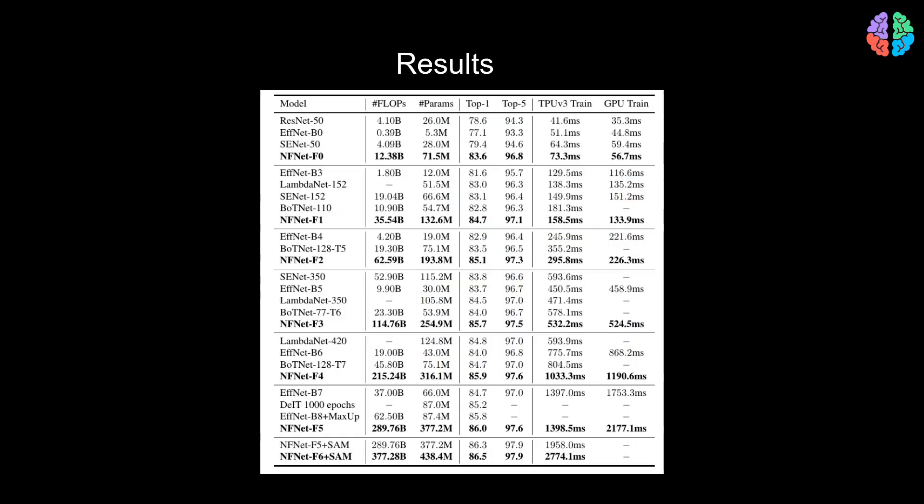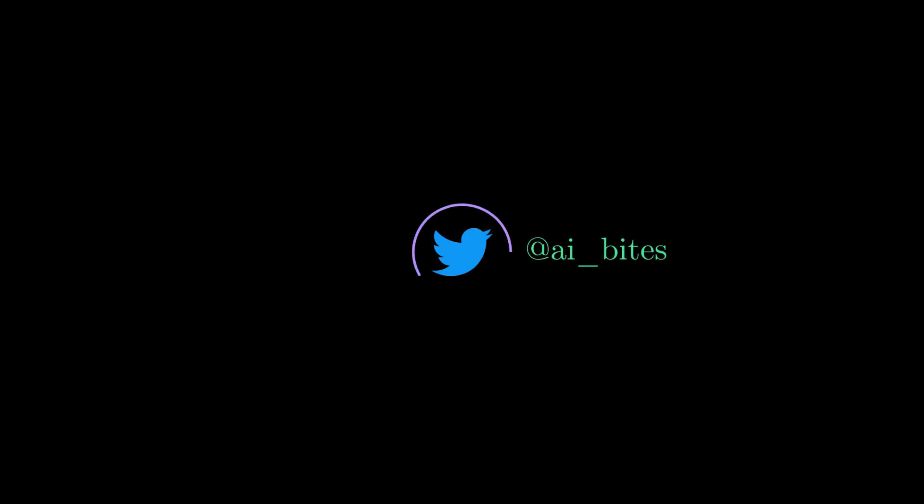So these are the results presented in the paper and no surprises here. NF-Nets seem to do better than some of the state-of-the-art networks like LambdaNet, BotNet and Data Efficient Image Transform. So that was NF-Nets, which is one of the first papers that goes normalization-free by removing the batch normalization layer. And it beats the state-of-the-art networks that have batch normalization layers in them.